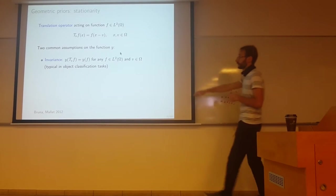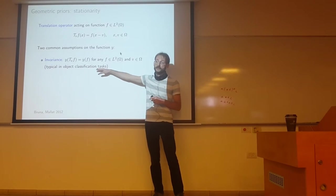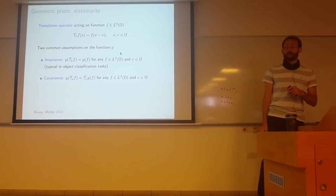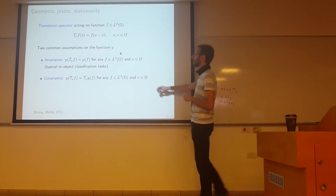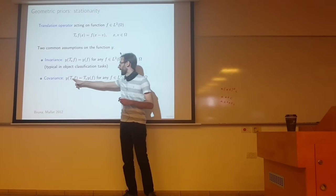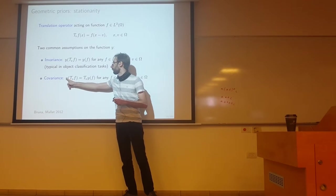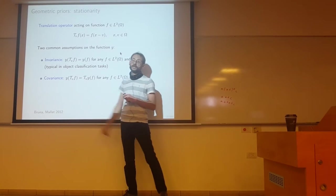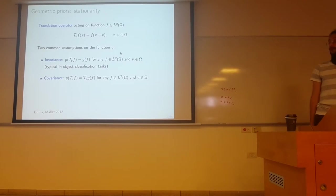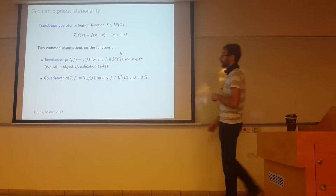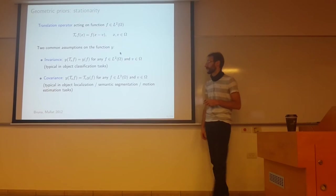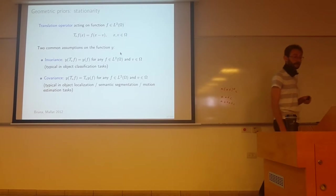Another assumption is covariance. In this case, you assume the output of the functional is some vector space - it's a regression problem. Basically, the functional y commutes with the translation operator. If you apply y to the translated version of f, you get the translated version of y of f. This is typical in object detection, localization, semantic segmentation, and motion estimation tasks.